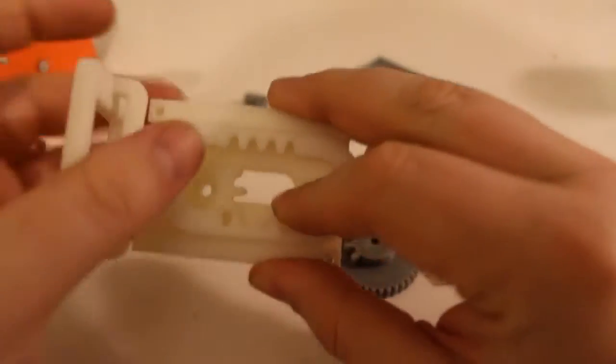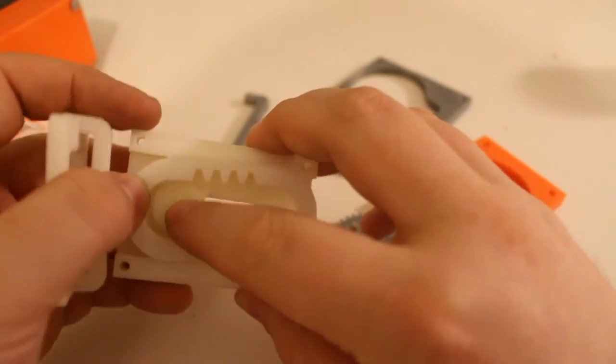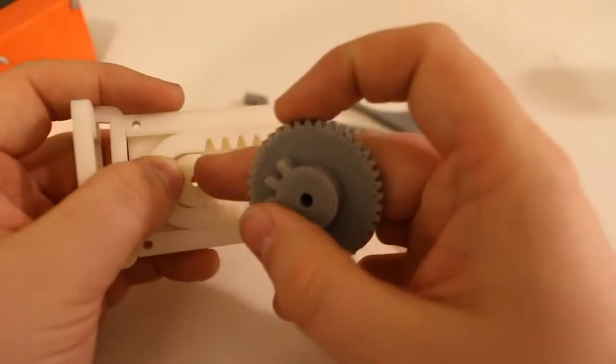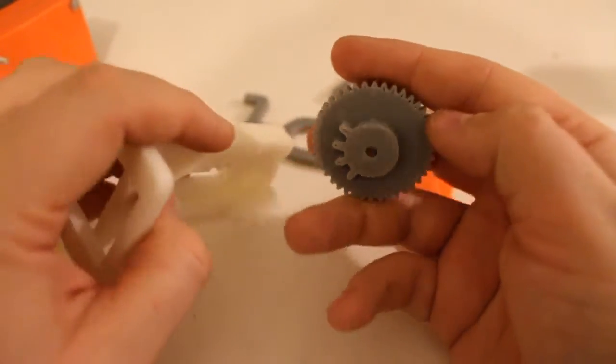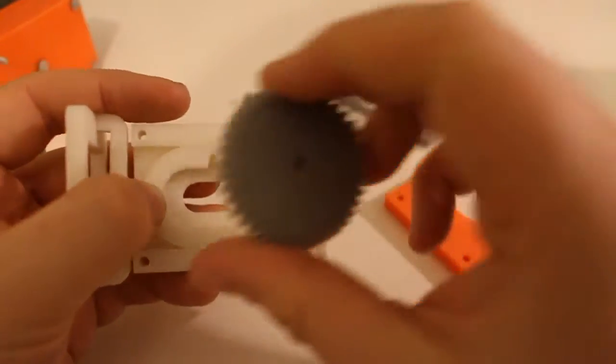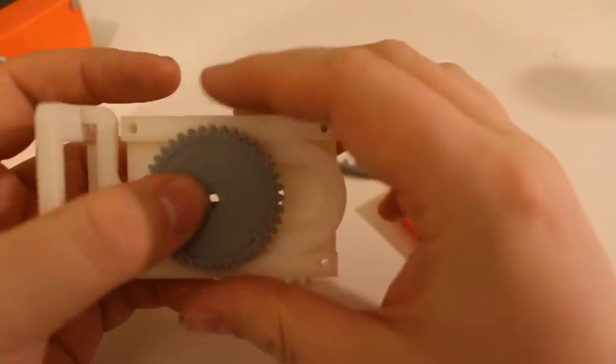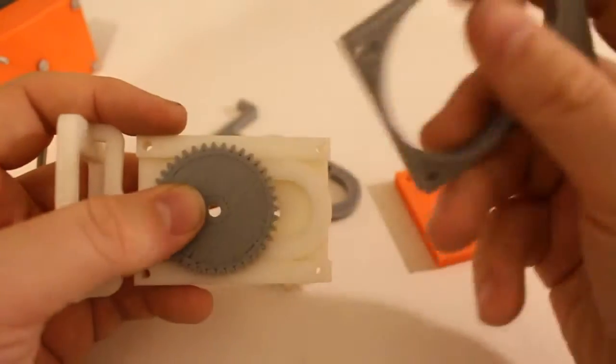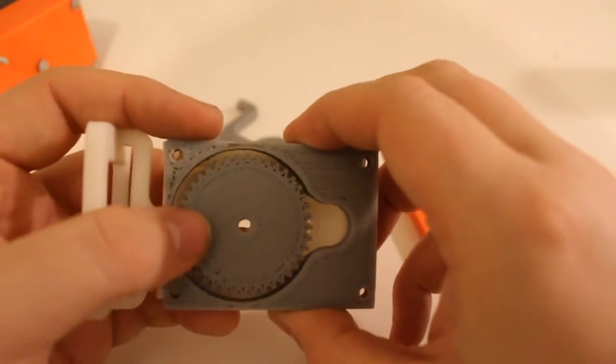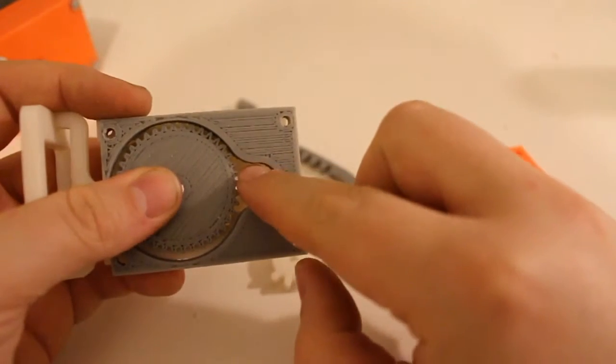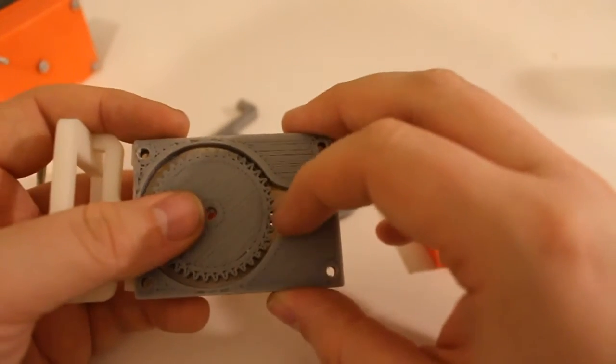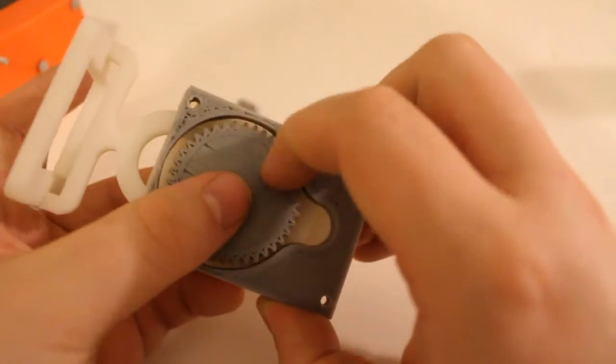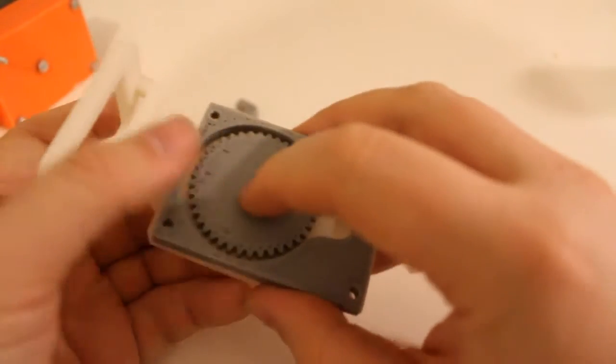So next iteration was to have... The white wheel is the same like this one. And this was supposed to go there. And then of course you need a spacer. And the motor would go here with the gear fitting to this one. So yeah, it's a very fast motor. So this works well.